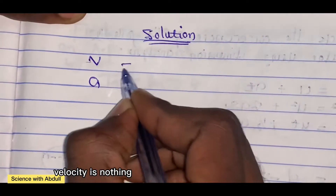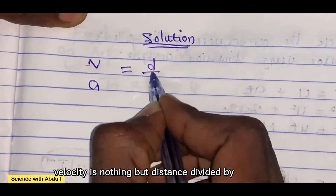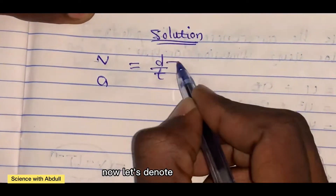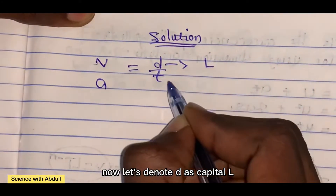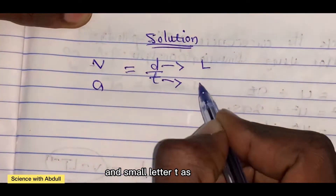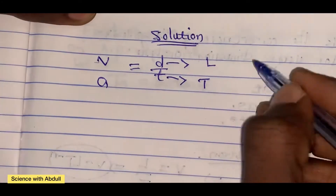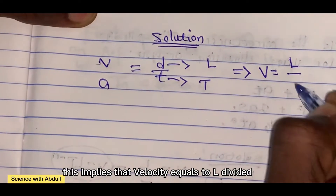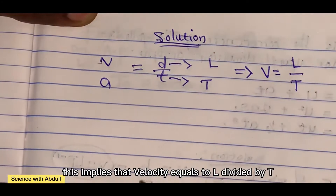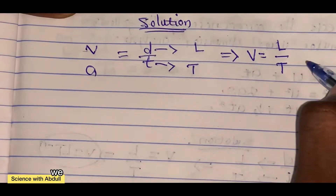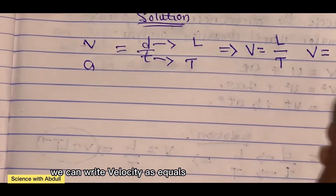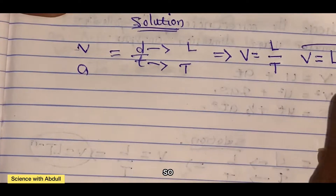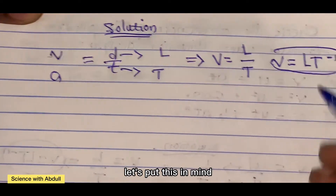Velocity is nothing but distance divided by time taken. We denote distance as capital L and time as capital T. This implies that velocity equals L divided by T, and from the index law we can write velocity as L T to the power of negative 1. Let's keep this in mind.